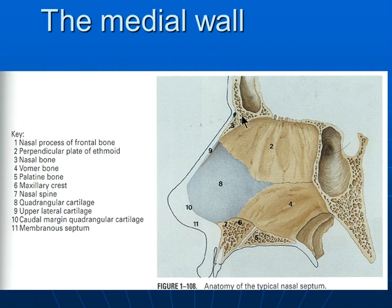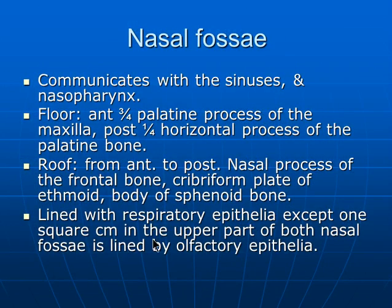As seen in this picture, the roof structures are the frontal bone, the cribriform plate of ethmoid, and the body of the sphenoid. The nasal cavity is lined by respiratory epithelium, which is described as pseudostratified columnar epithelium with goblet cells, except for the upper portion which is lined by olfactory epithelium.